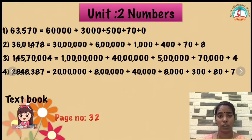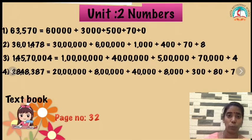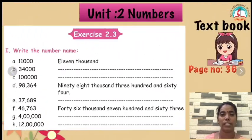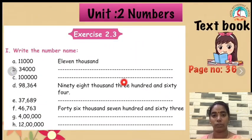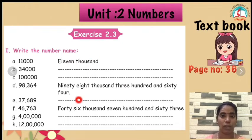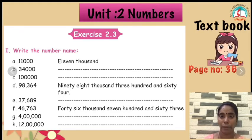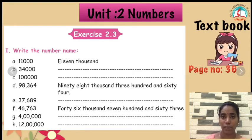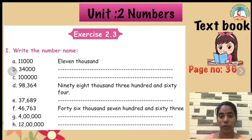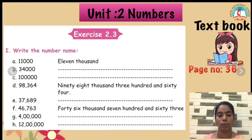We are going to see exercise 2.3. Children have to write this in your book. What do you want to write? You choose the right number name. For example, 11,000 is given — what is the next number? 34,000. Write this in your book.